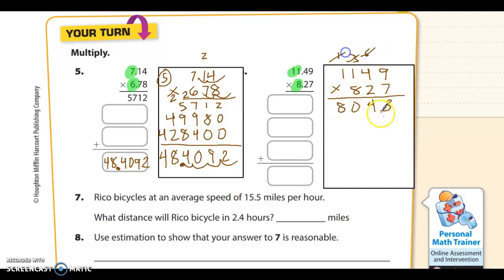I am in the tens place. I'm going to annex 1 zero. 2 times 9 is 18. 2 times 4 is 8, plus 1 is 9. 2 times 1 is 2, and 2 times 1 is 2.